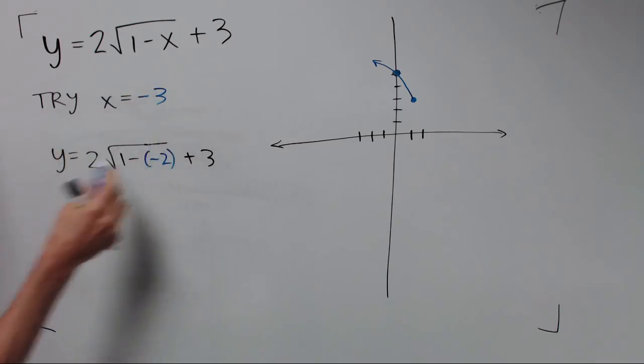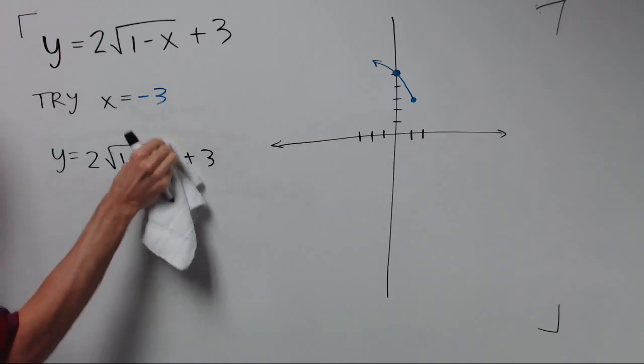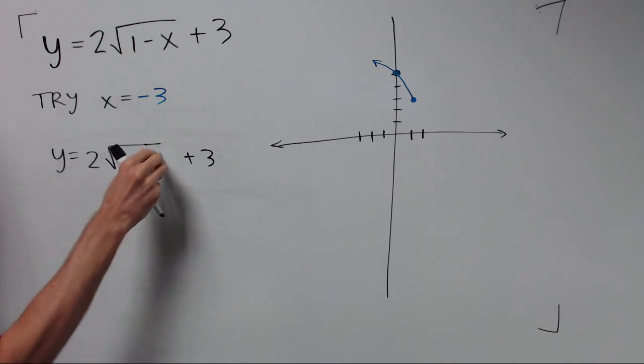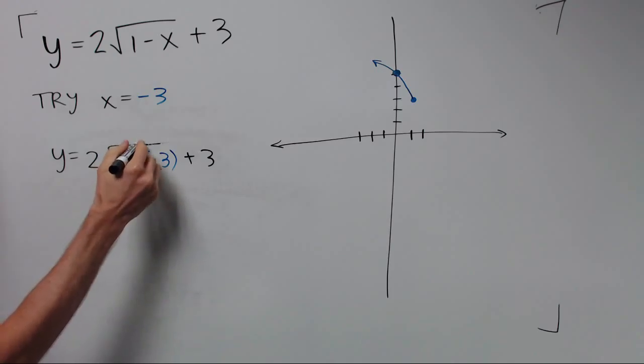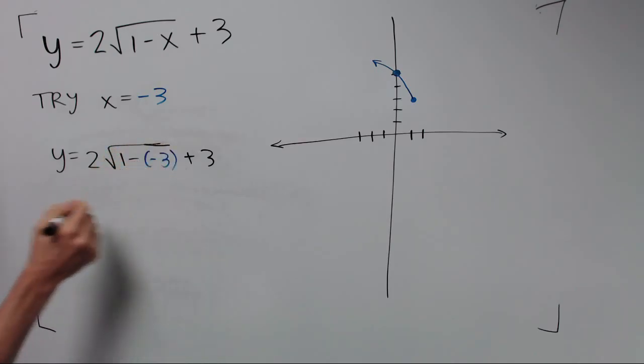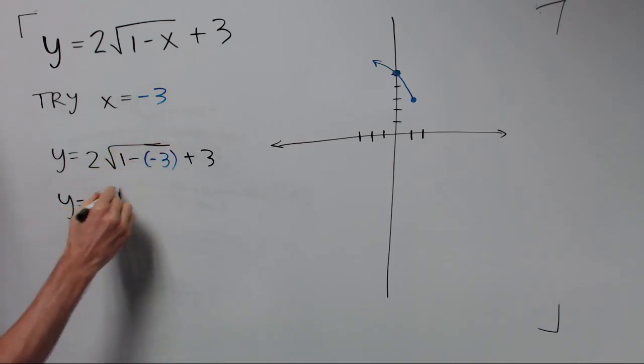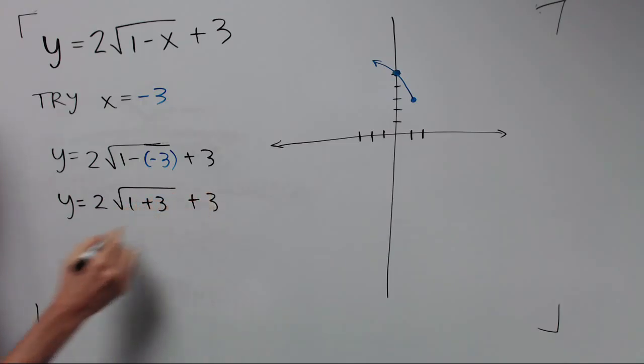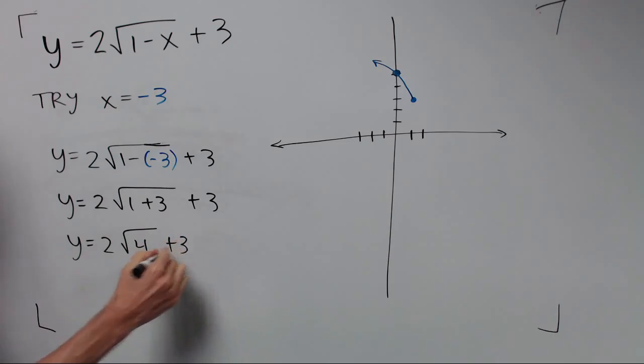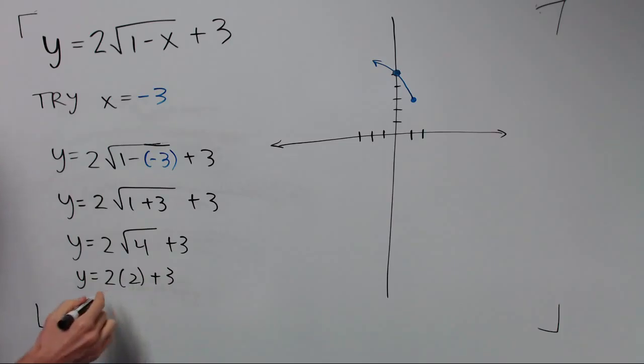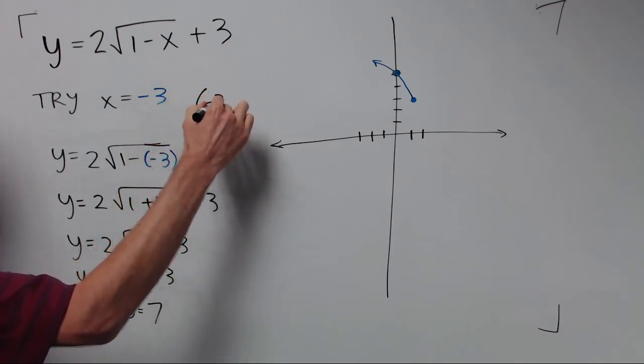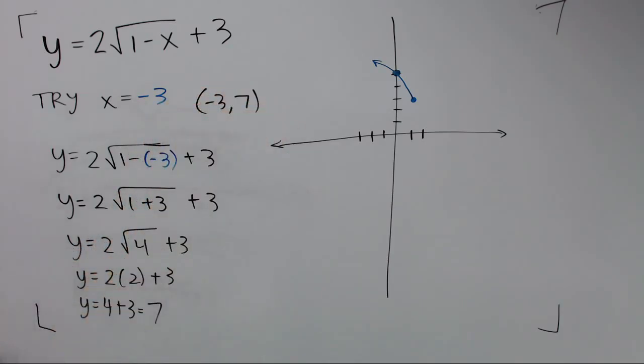Our next number would be negative 3, and this is going to work. Because 1 minus negative 3 is 1 plus 3, and 1 plus 3 is 4. And square root of 4 is 2. 2 times 2 is 4, and so we get y is 7. So we get negative 3, 7 for our third point.